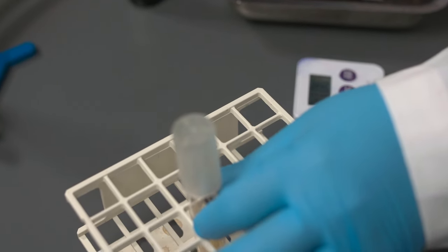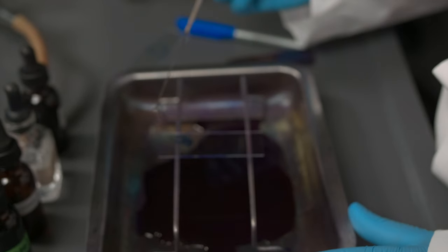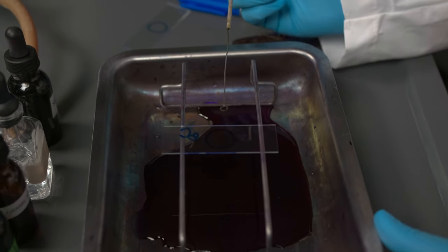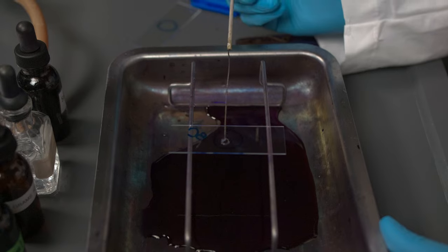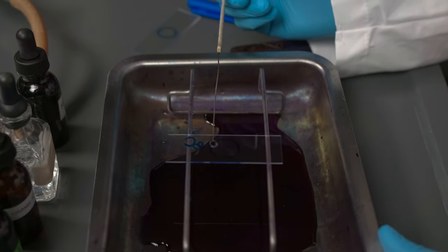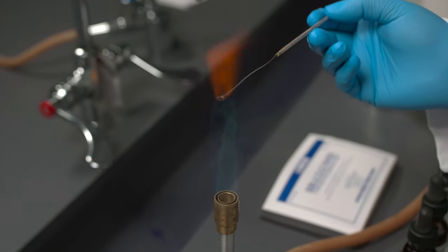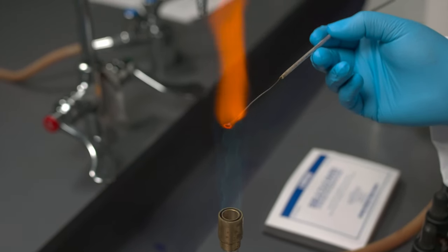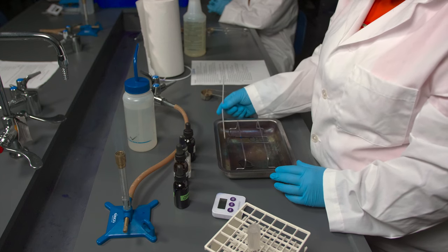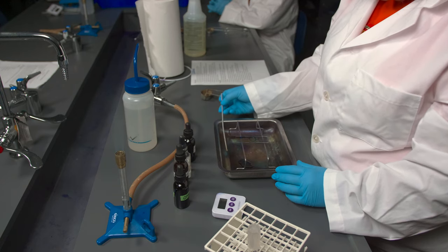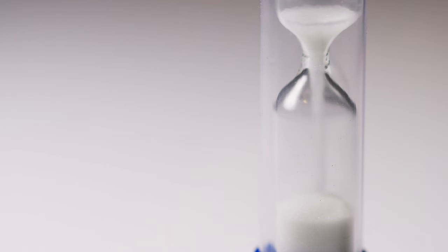Take the loop with the bacteria on it and make a thin smear on your slide. Flame the loop to sterilize it and set it aside. Allow the slide to air dry. Once the slide is dry,